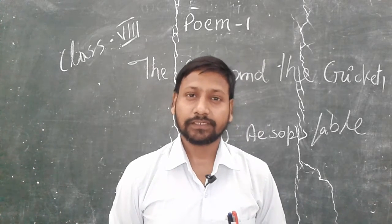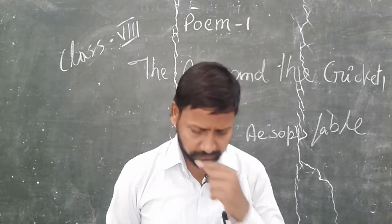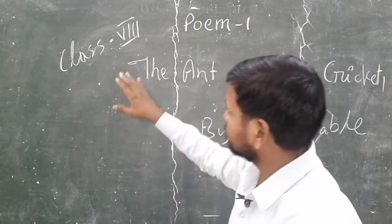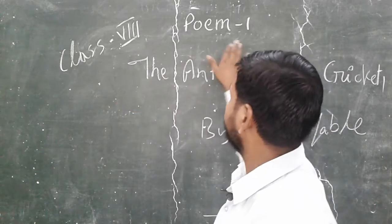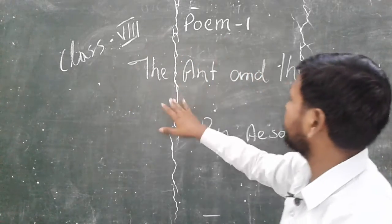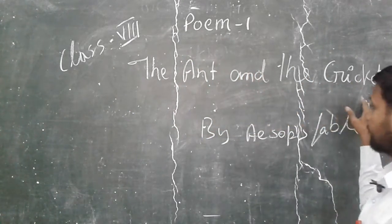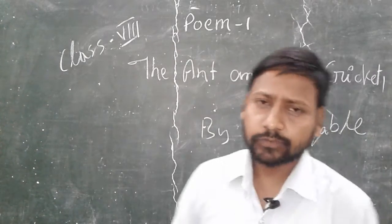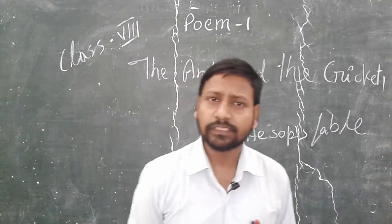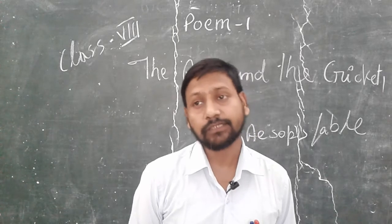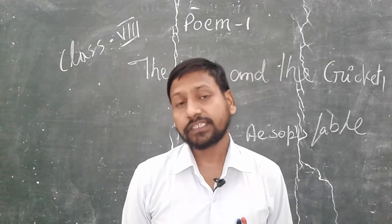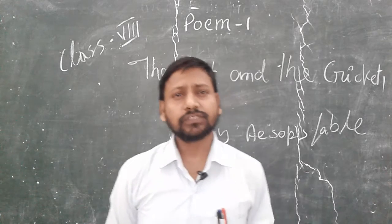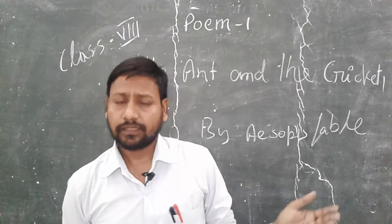We are going to start chapter with this poem. So my dear students, this is your first poem, Class 8, first poem — 'The Ant and the Cricket' by Aesop's Fable. Aesop's Fable means it is a story which has been recited by our parents and grandparents. So this is called Aesop's Fable.